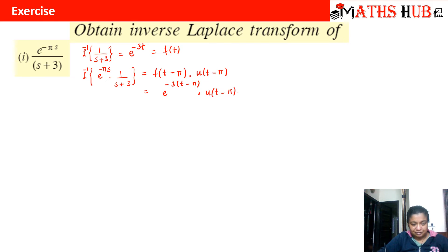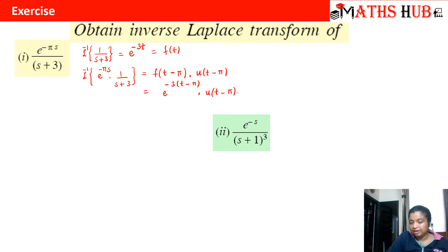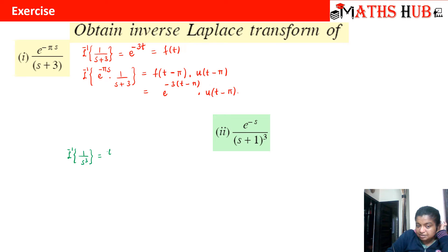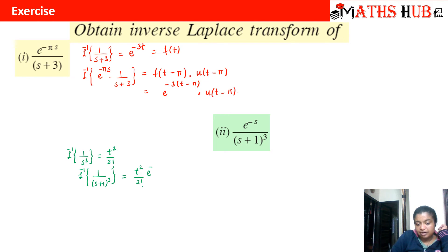Now let us do the second question: inverse Laplace of e raised to power minus s upon (s plus 1) whole cube. Again there is a product of an exponential and 1 upon (s plus 1) whole cube. First, the inverse Laplace of 1 by s cube is t squared by 2 factorial. Then by the first shifting property, the inverse Laplace of 1 by (s plus 1) whole cube is t squared by 2 factorial into e raised to power minus t. This is my function f(t).